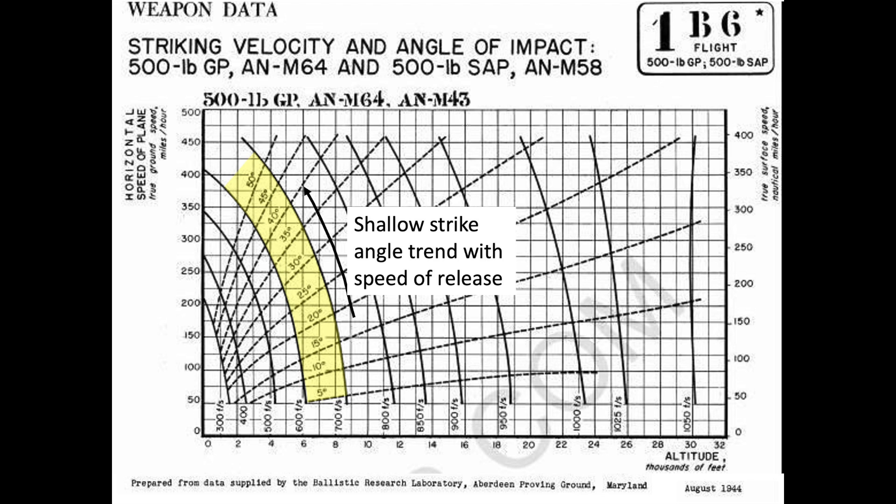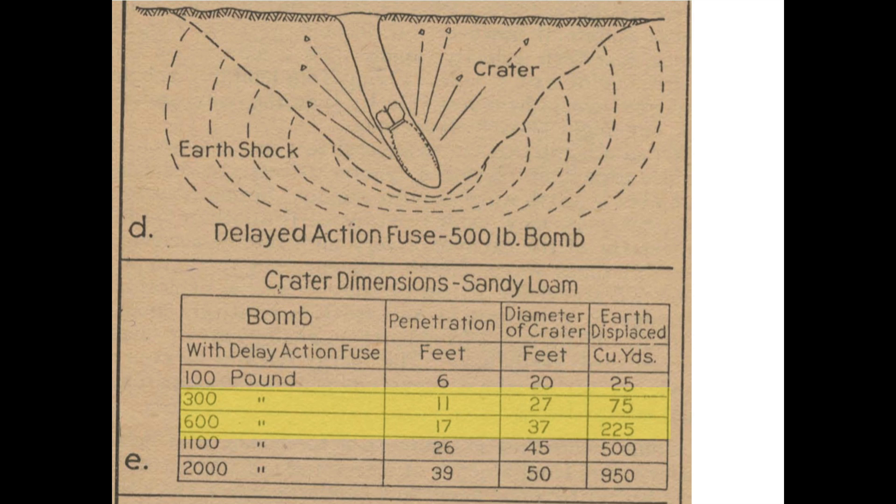We have discussed in the Part 1 bombing video, a 500 pound delayed fuse bomb will burrow about 12 feet below the soil. The bomb's detonation will cause an earth shock crater about 35 feet wide and 15 feet deep.